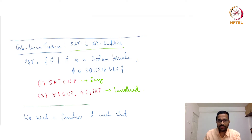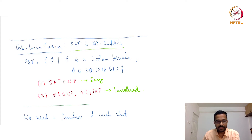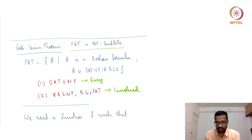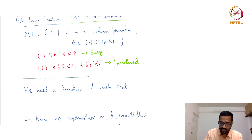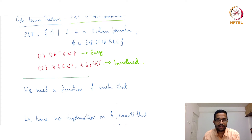SAT is in NP because you can make a nondeterministic guess of the various true/false assignments and then evaluate the formula, which is not difficult. So part 1 is easy and we have already seen it. Part 2 — showing all NP languages reduce to SAT — is what we will start now.